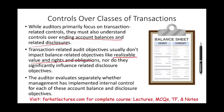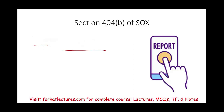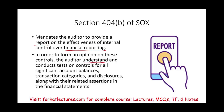The auditor evaluates separately whether management has implemented internal control for each of these account balances and disclosures. At the end, auditors are mandated to provide a report on the effectiveness of internal control over financial reporting. In order to form an opinion on this control, the auditor must first understand it and conduct tests on controls for all significant account balances, transaction categories, and disclosures, along with the related assertions.